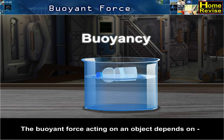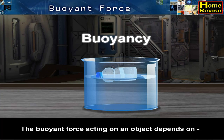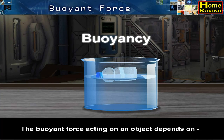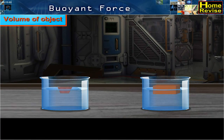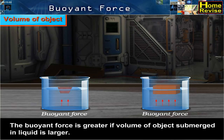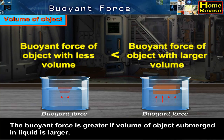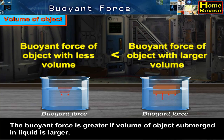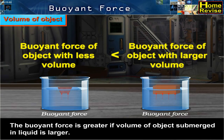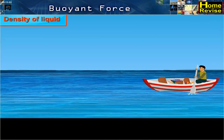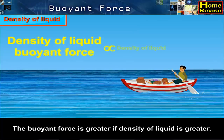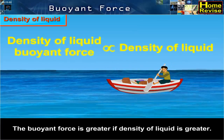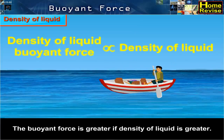The buoyant force acting on an object depends on two factors: a) Volume of object — the buoyant force is greater if the volume of the object submerged in the liquid is larger; b) Density of liquid — the buoyant force is greater if the density of the liquid is greater.